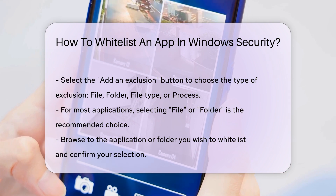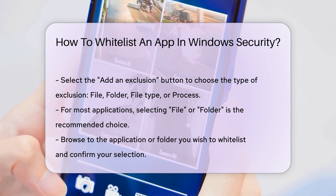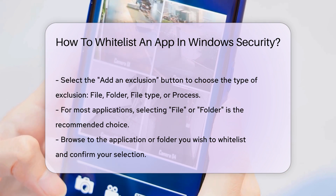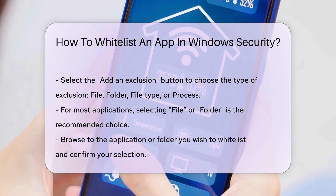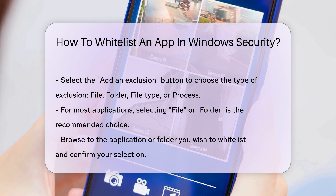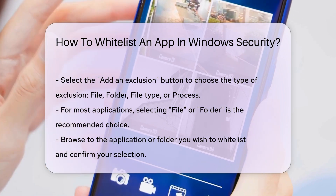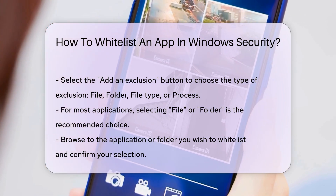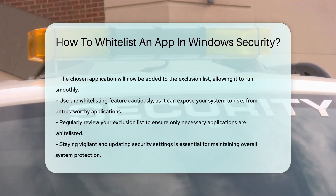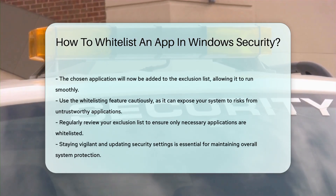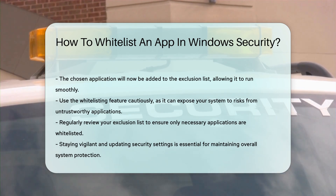After making your selection, browse to the application or folder you wish to whitelist. Once located, select it and confirm your choice. The application will now be added to the Exclusion list. Remember to use this feature judiciously — whitelisting applications can expose your system to risks if the application is not trustworthy. Regularly review your exclusion list to ensure that only necessary applications are included.